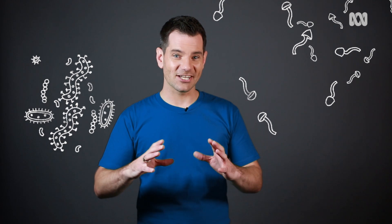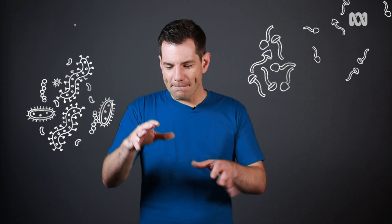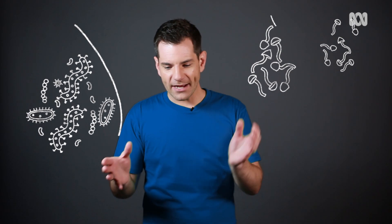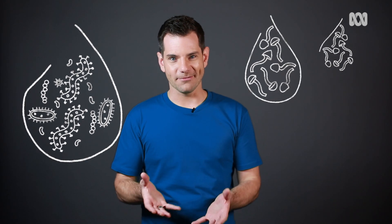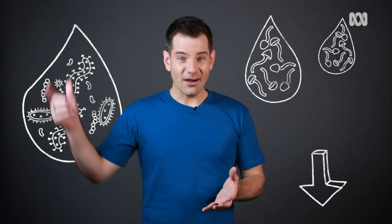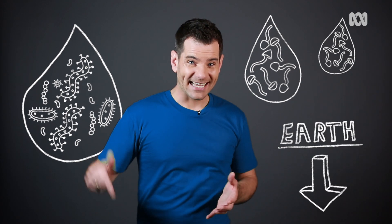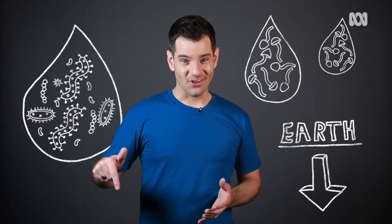Some scientists think that some types of bacteria and mushroom spores may have evolved to be the perfect cloud condensation nuclei, so that they can build a raindrop around them to help them get back down to earth.